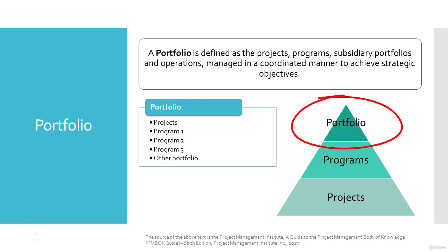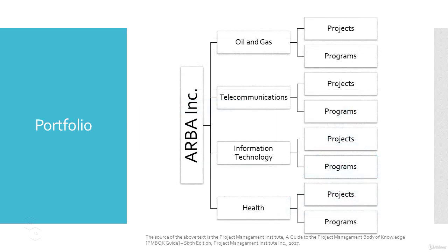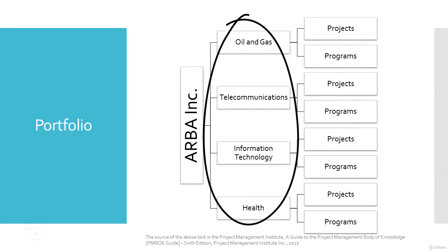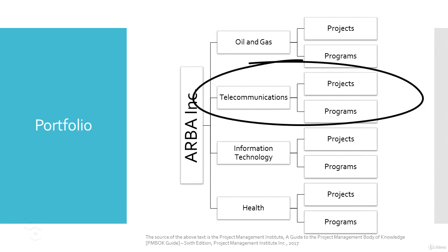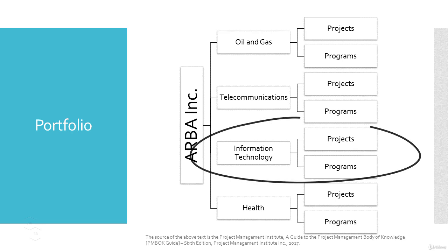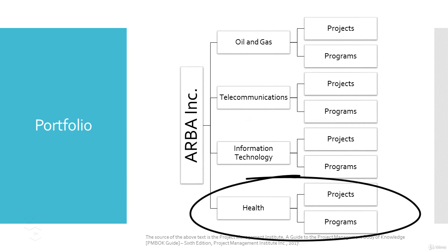Portfolios are a means to achieve an organization's strategic objectives since portfolios always exist at the top of the organization's hierarchy. All projects and programs are always created under the portfolio. For example, let's say a company named Arba Incorporated is investing large amounts of money in different sectors such as oil and gas, telecommunications, IT, and health — this would be called Arba's investment portfolio. All projects and programs belonging to oil and gas will be managed under the oil and gas portfolio, and similarly projects and programs related to telecom, IT, and health will be managed by their respective portfolios under Arba Incorporated.